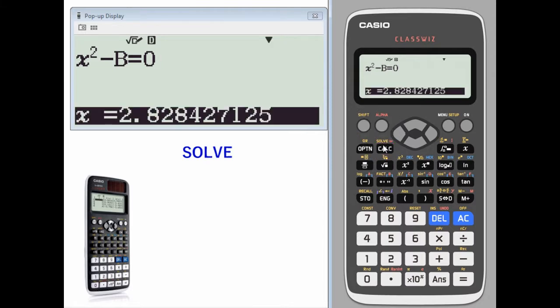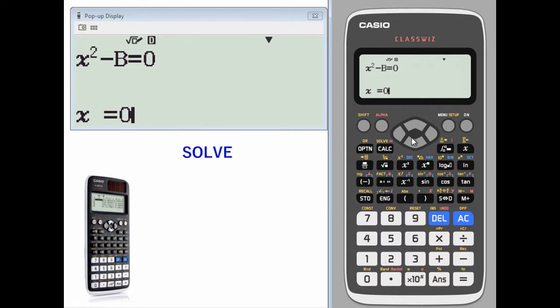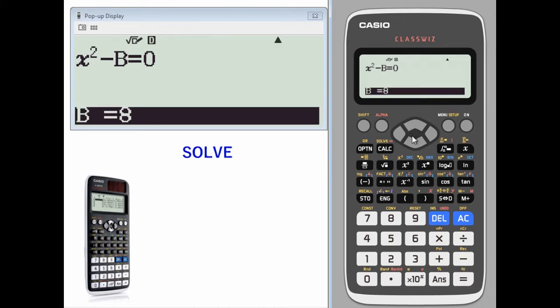Shift solve. Type in an initial value of x of zero. Use the arrow key down to get to b. A b value we'll put in as four.